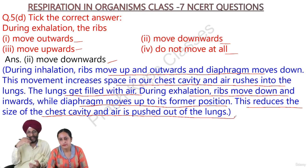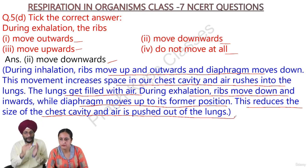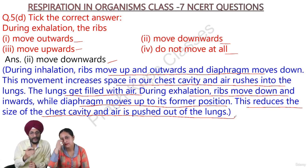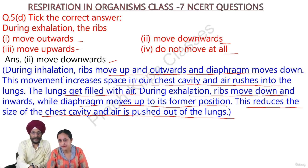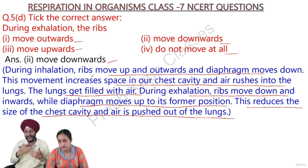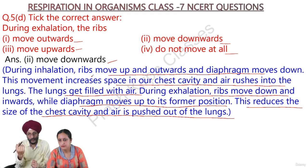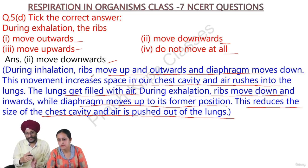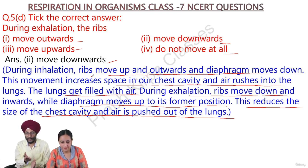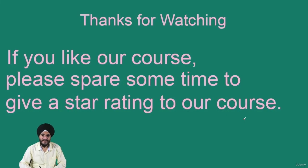During exhalation — when we breathe out carbon dioxide — the ribs move downward. During inhalation, the ribs move up and outward and the diaphragm moves down. This movement increases the space in our chest cavity and air rushes into the lungs. When we exhale, the chest cavity reduces, the ribs move down, and the diaphragm moves up to its former position.